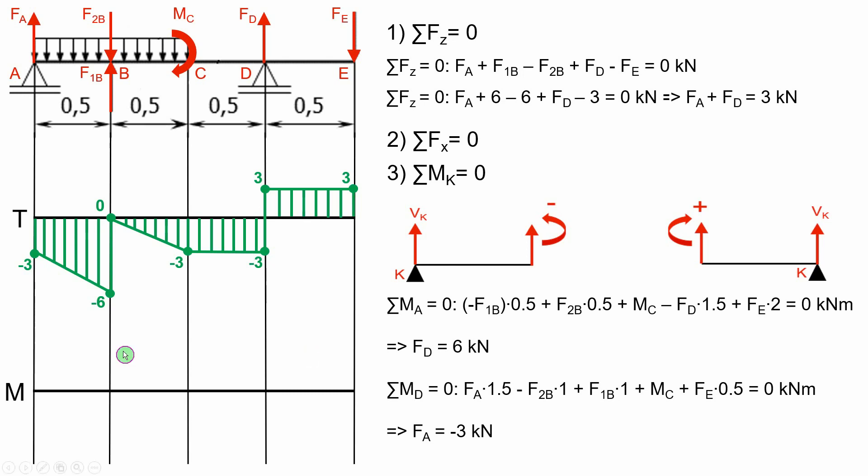We will start the diagram from AB section and to find out the value of the moment in this section, we have to calculate the area of this trapeze, so from 0 we go to minus 2.25.